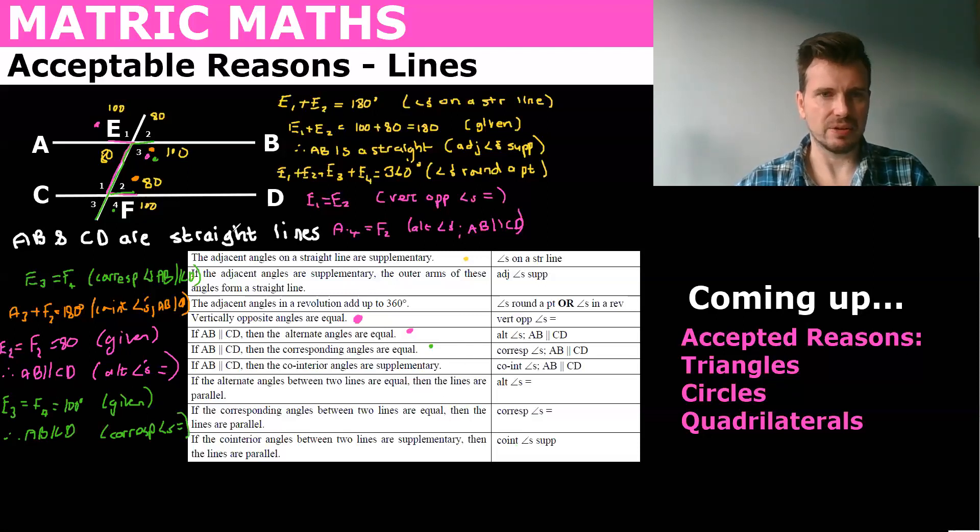And finally the co-interior supplementary so that we did in orange and so we have E3 plus F2 equals 100 plus 80 equals 180 given therefore AB parallel to CD and the reason is co-int angles sup.